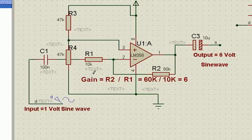We will see how the gain is governed by R2 by R1. R2 is equal to 60k and R1 is 10k, so the gain is 6. That means if I give 1 volt here, I will get 6 volts here.